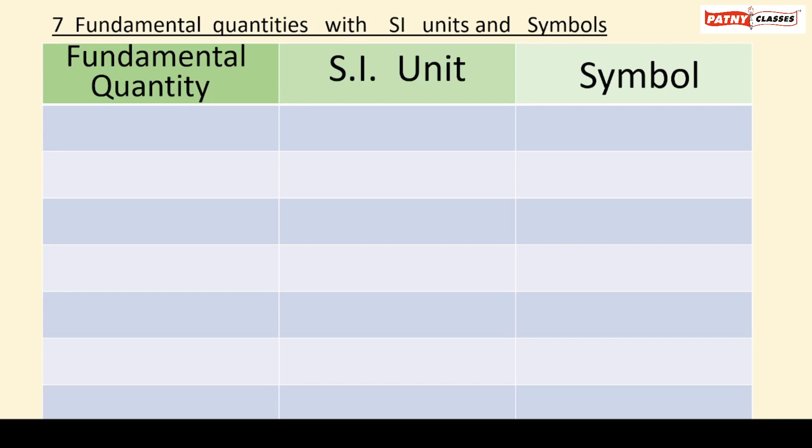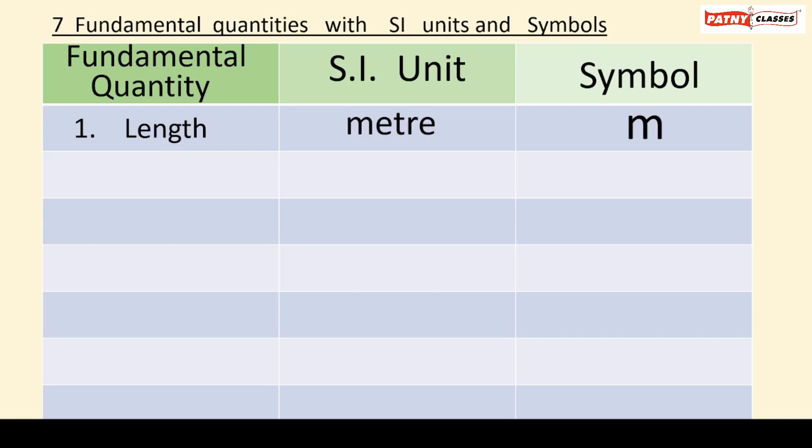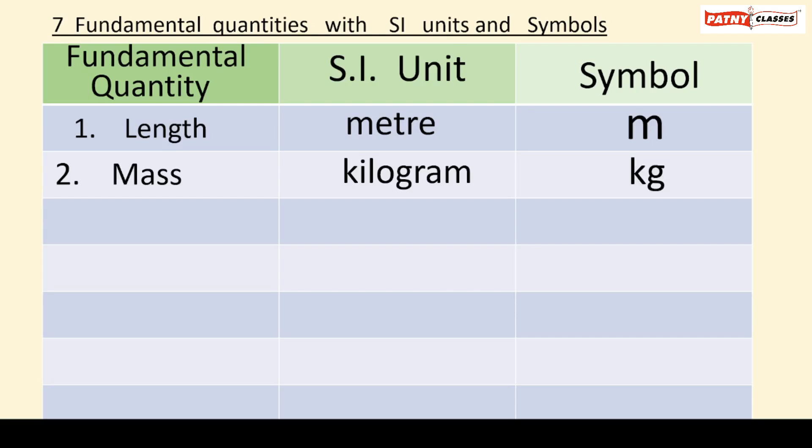The first fundamental quantity under the SI system is length, whose SI unit is meter and symbol is small m. The length of an object can be measured with the help of a measuring tape. The second fundamental quantity is mass, whose SI unit is kilogram and symbol is kg. A beam balance is used to measure the mass of an object.